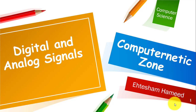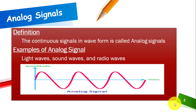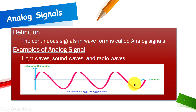So what are analog signals? Continuous signals — a waveform that is in the form of a continuous wave — are called analog signals. You can see here, this is a continuous wave that is moving, and this is an example of the representation of analog signals. We have a few examples like light waves, sound waves, and radio waves.